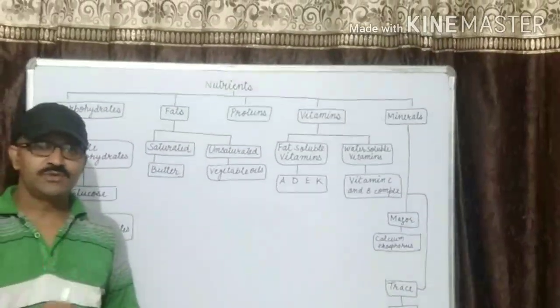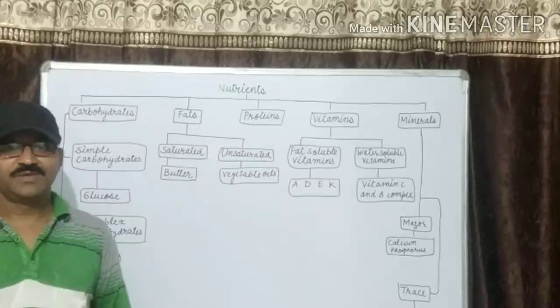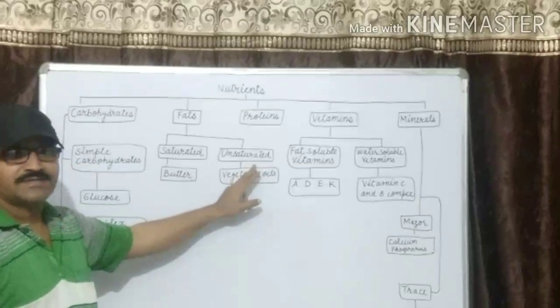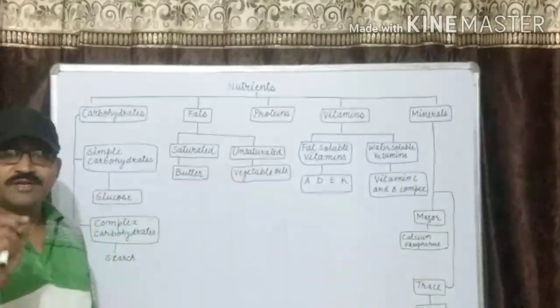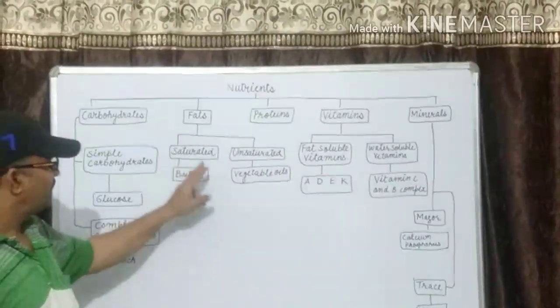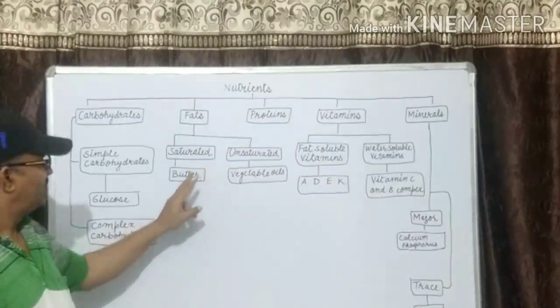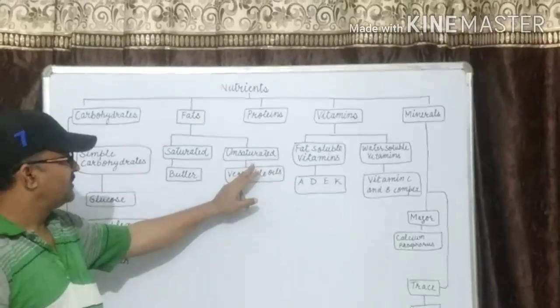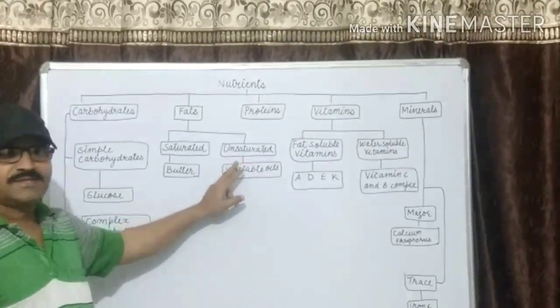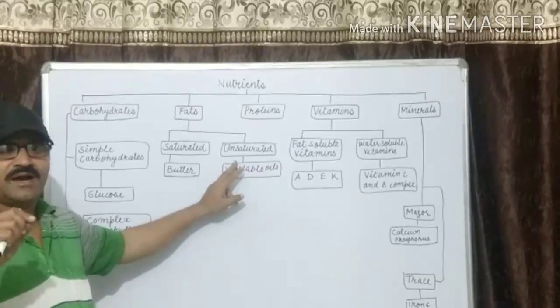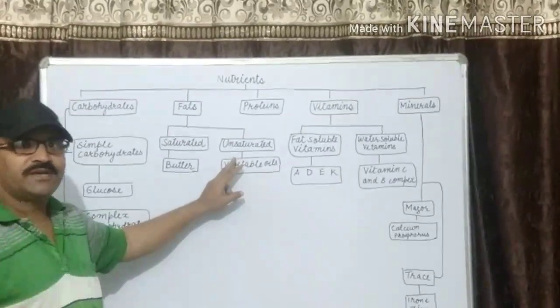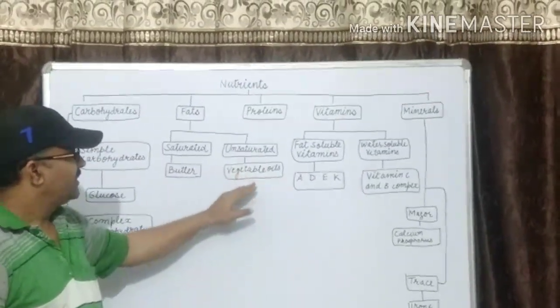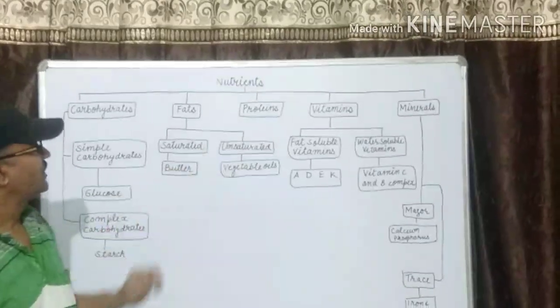Next is fats. It also provides energy. There are two types of fats: one is saturated, second is unsaturated. Saturated fats are normally solid at room temperature, for example butter. Unsaturated fats, the fats that are mostly liquid at room temperature, that is known as unsaturated, example vegetable oil.